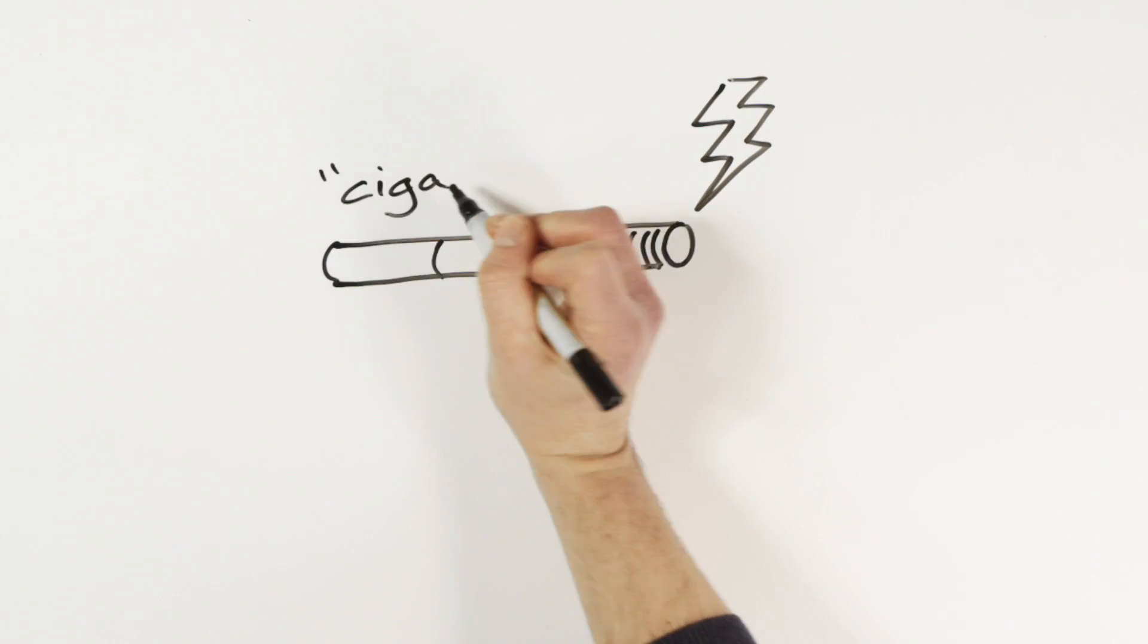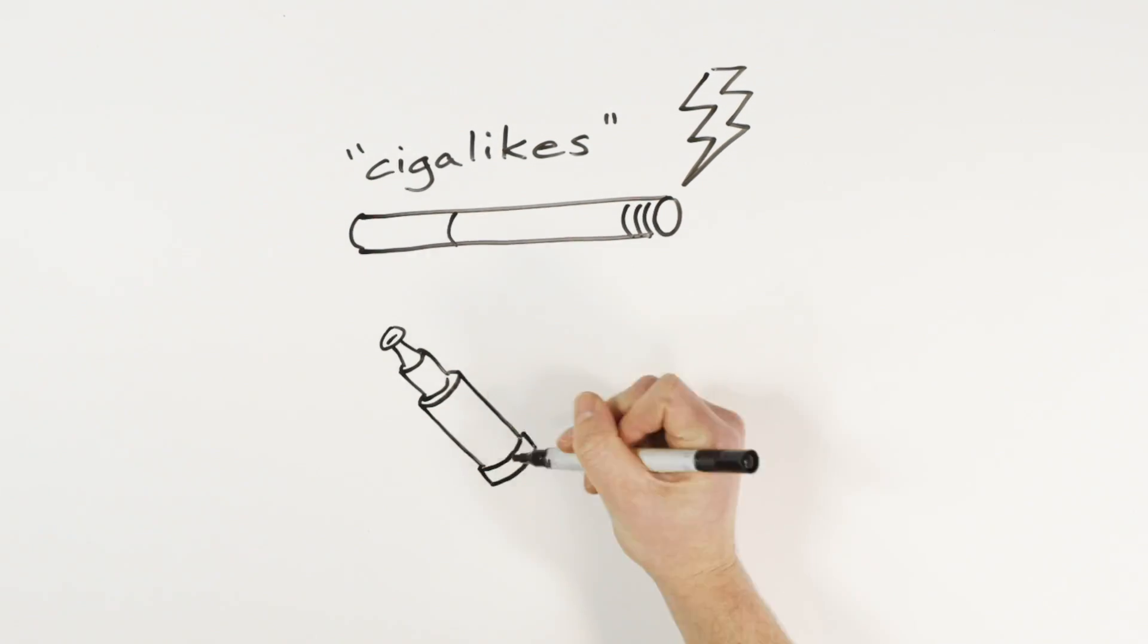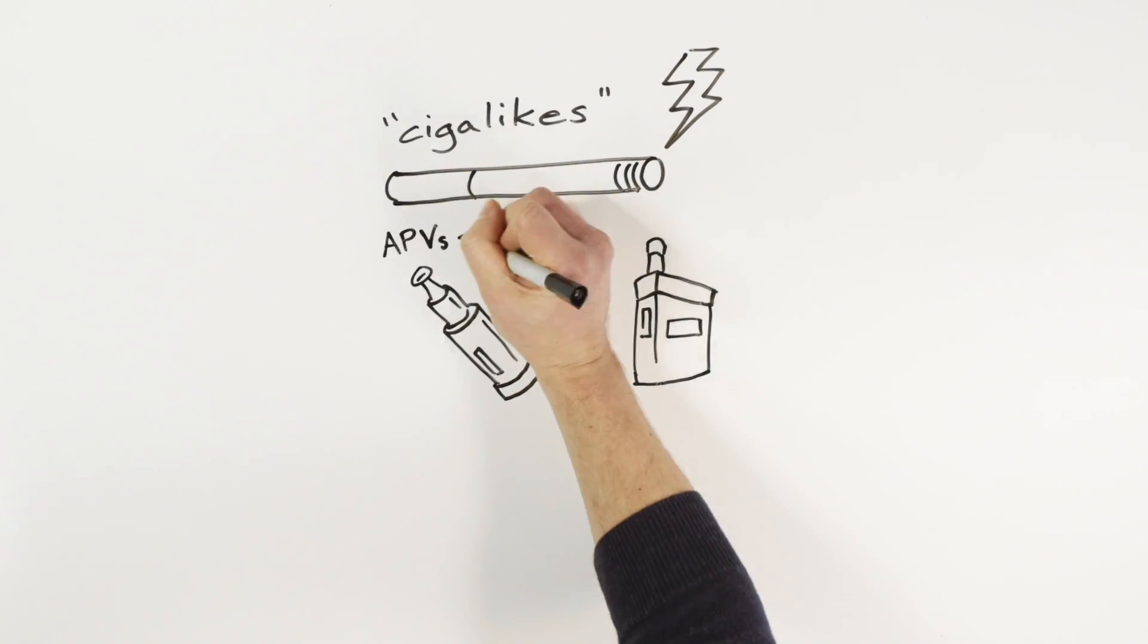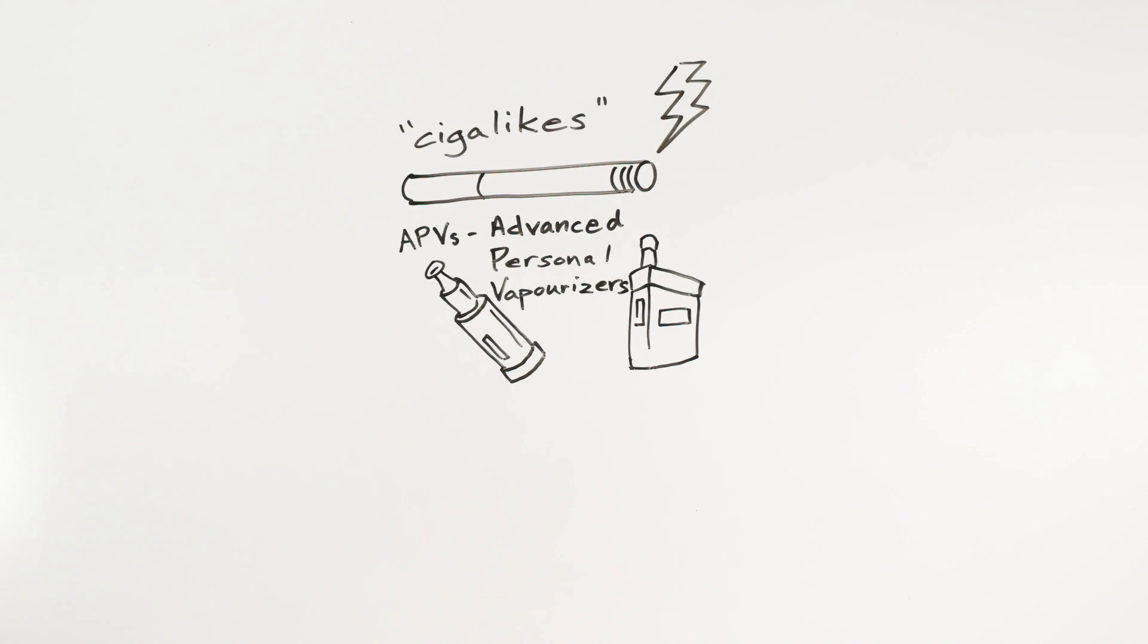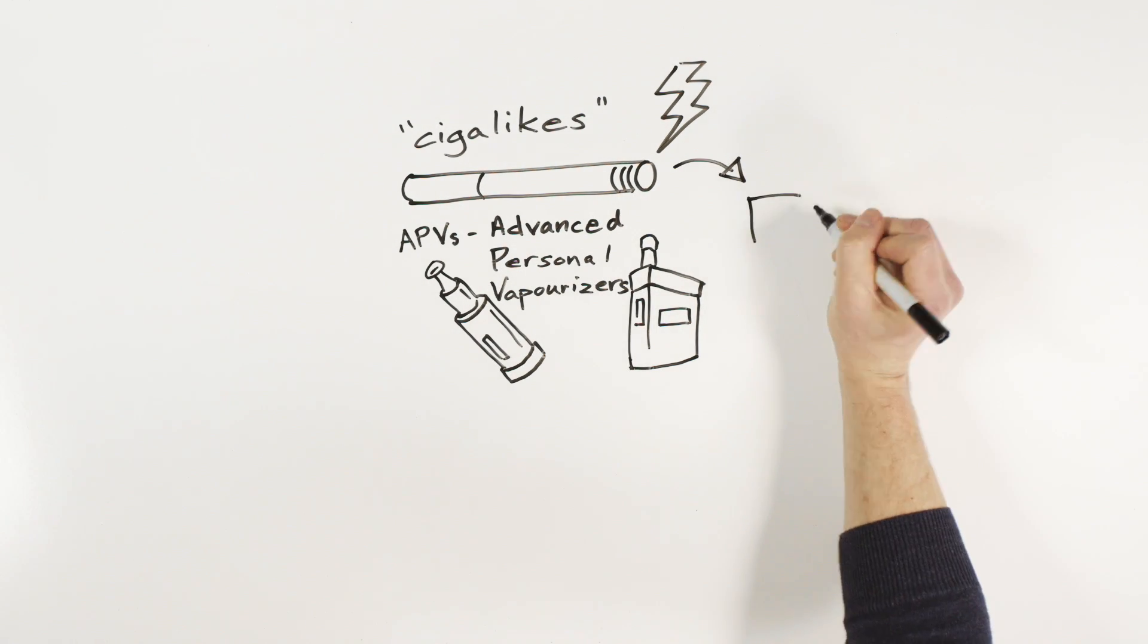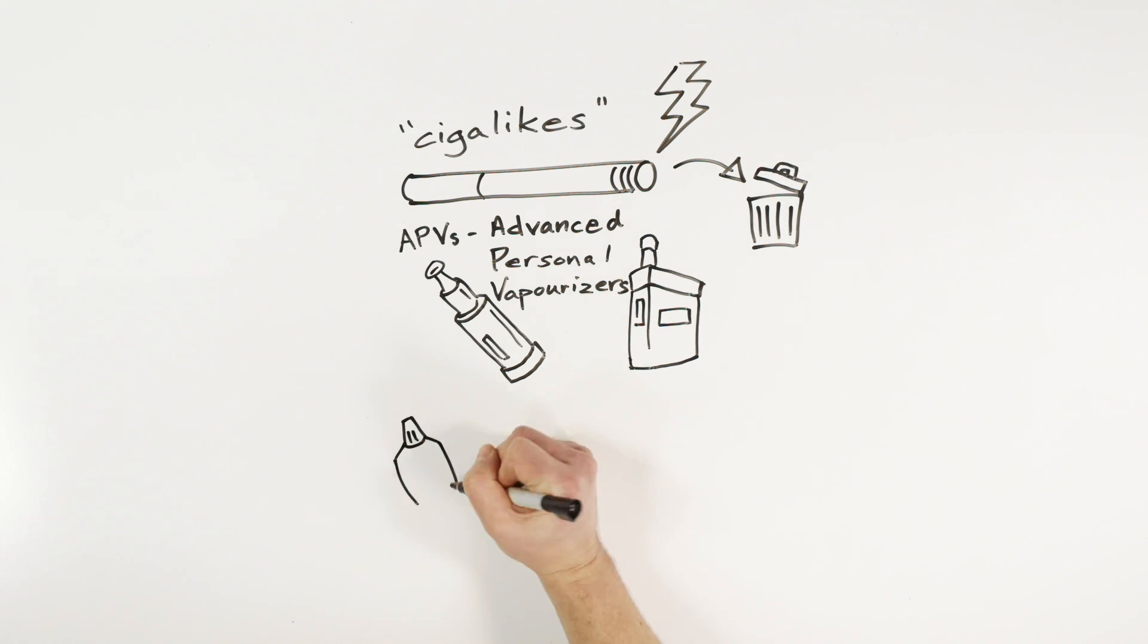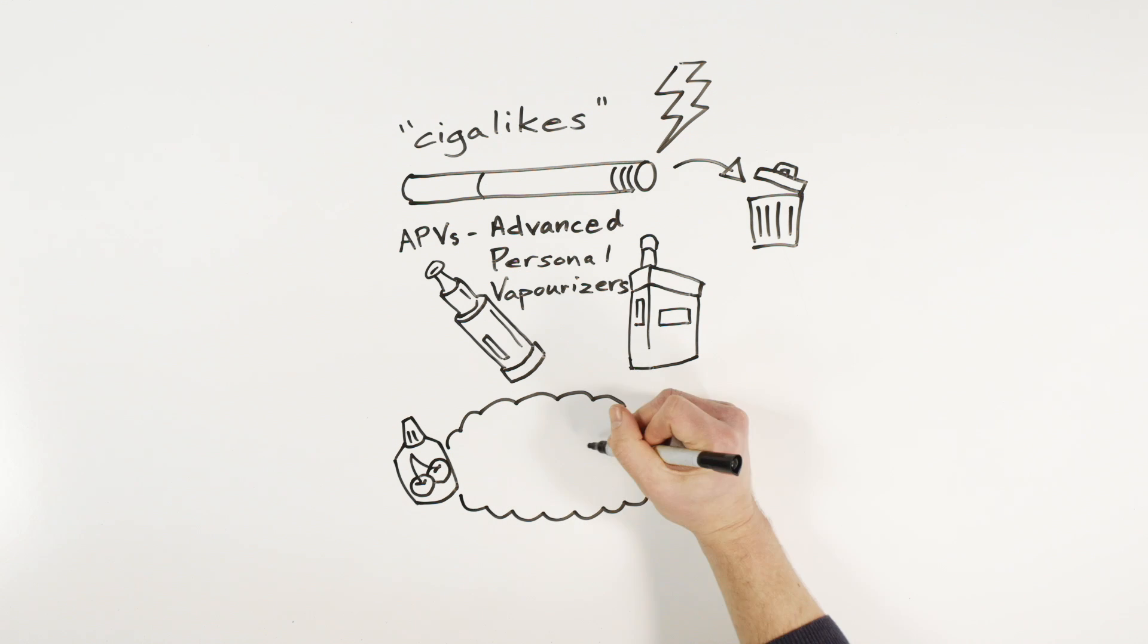There are many types of e-cigarettes. The most important distinction is between cigalikes, or e-cigarettes designed to look just like tobacco cigarettes, and advanced personal vaporizers, also known as tube mods and box mods. Cigalikes are disposable and have pre-filled cartridges. Advanced personal vaporizers are refillable and customizable in terms of e-liquid selection, vapor production, and nicotine content. They generally offer superior nicotine delivery.